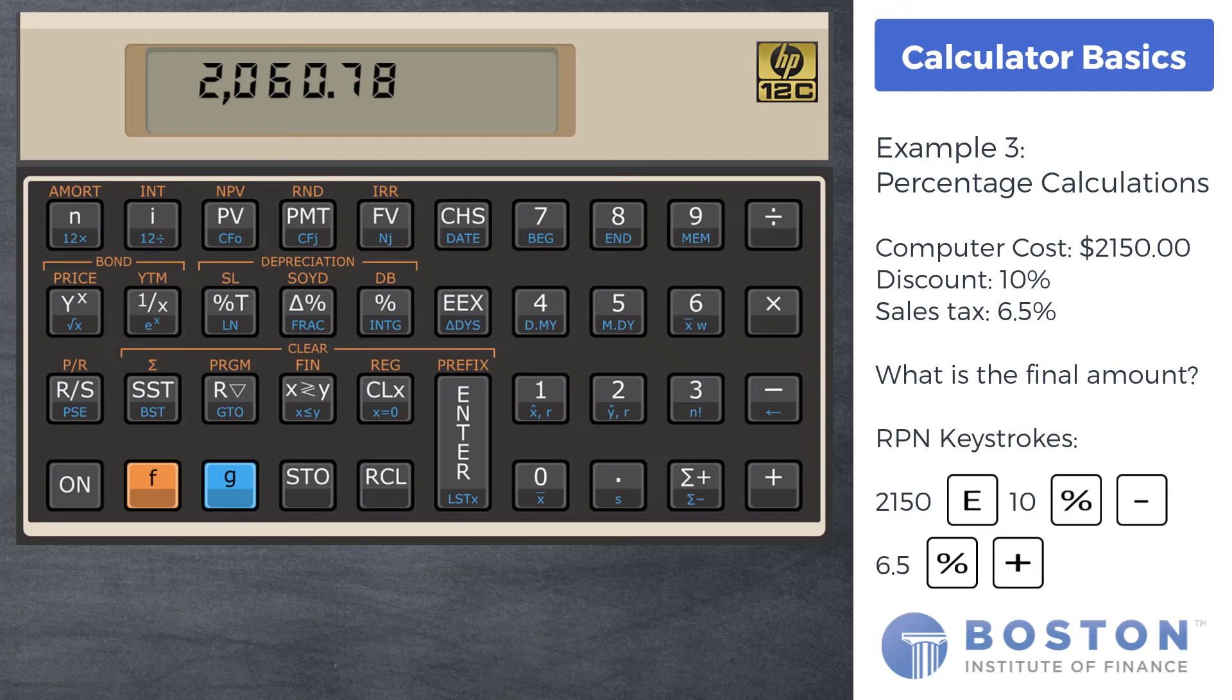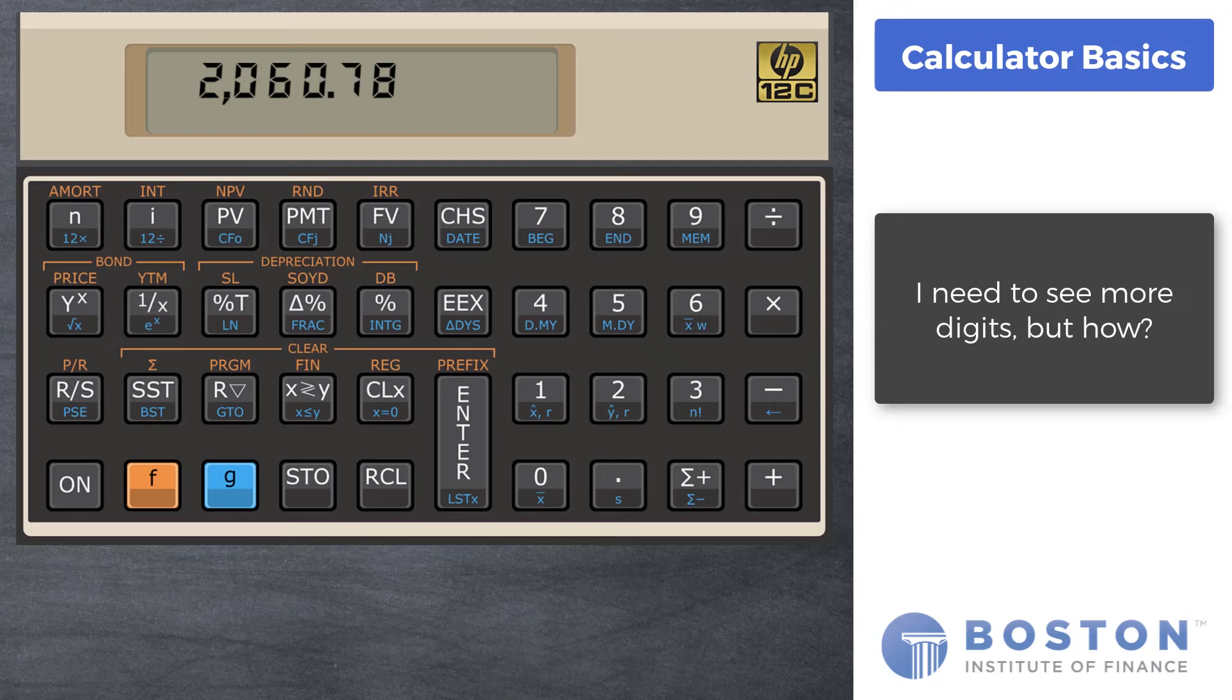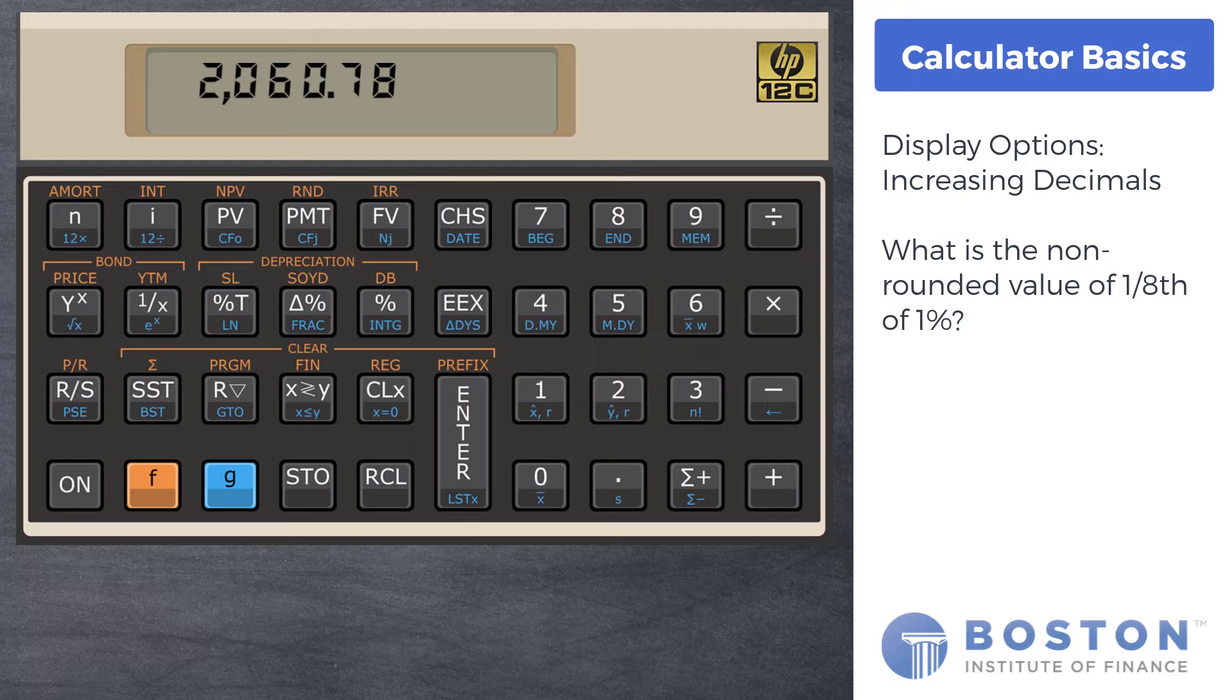Notice in all the calculations done so far all digits displayed are shown to two decimal places by default. The HP 12C will round the displayed value, which works well for calculations that involve money. But what if you need to see those extra decimal places? Suppose we need to see the decimal value of 1/8th of a percent.